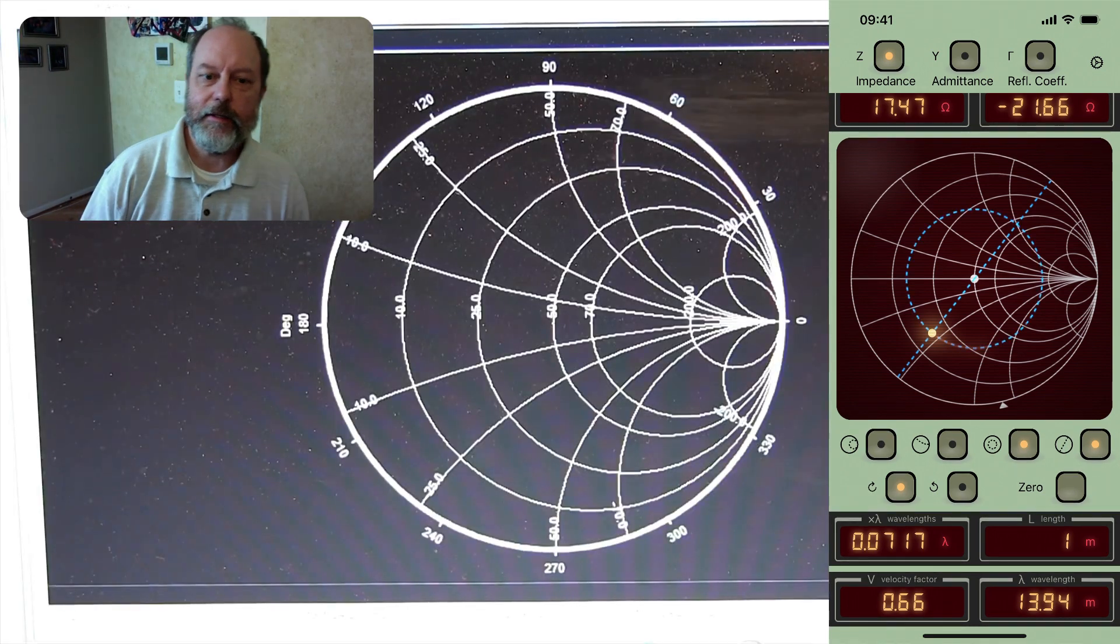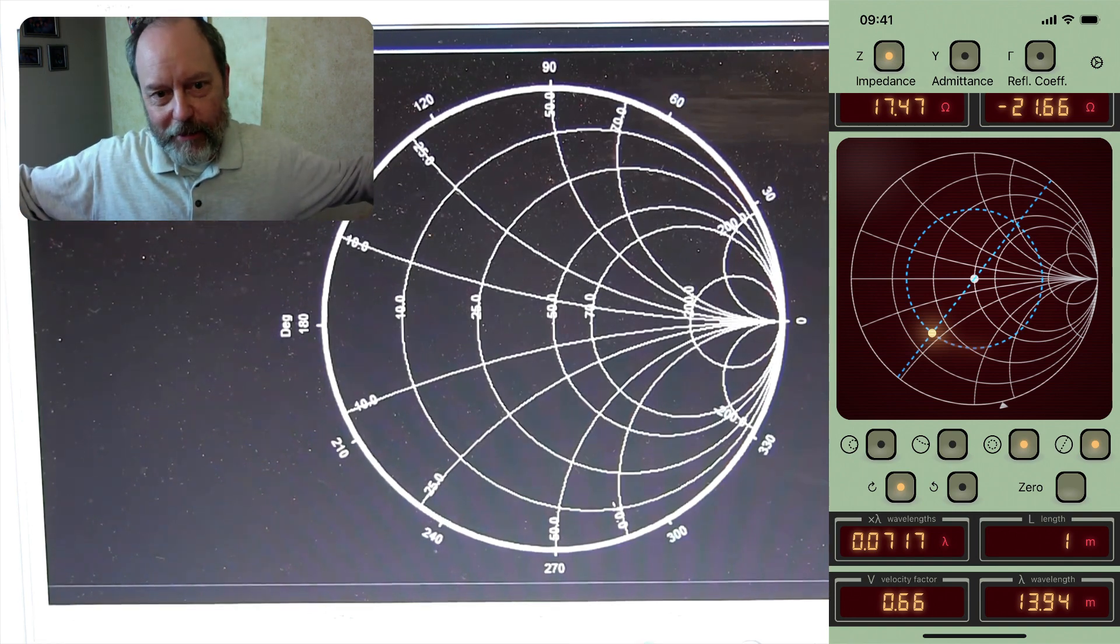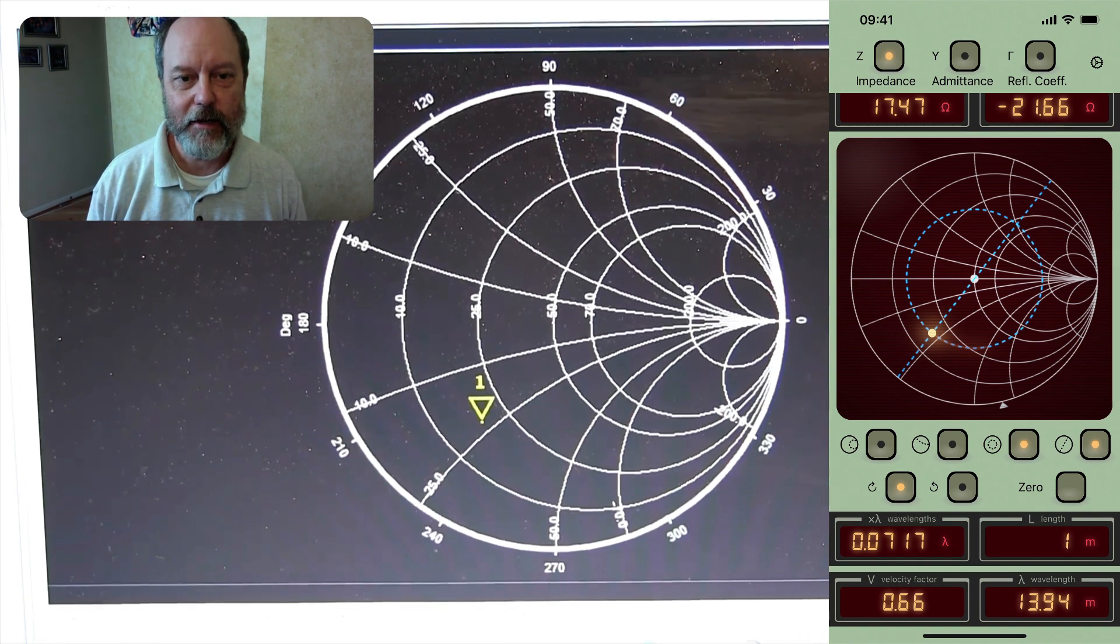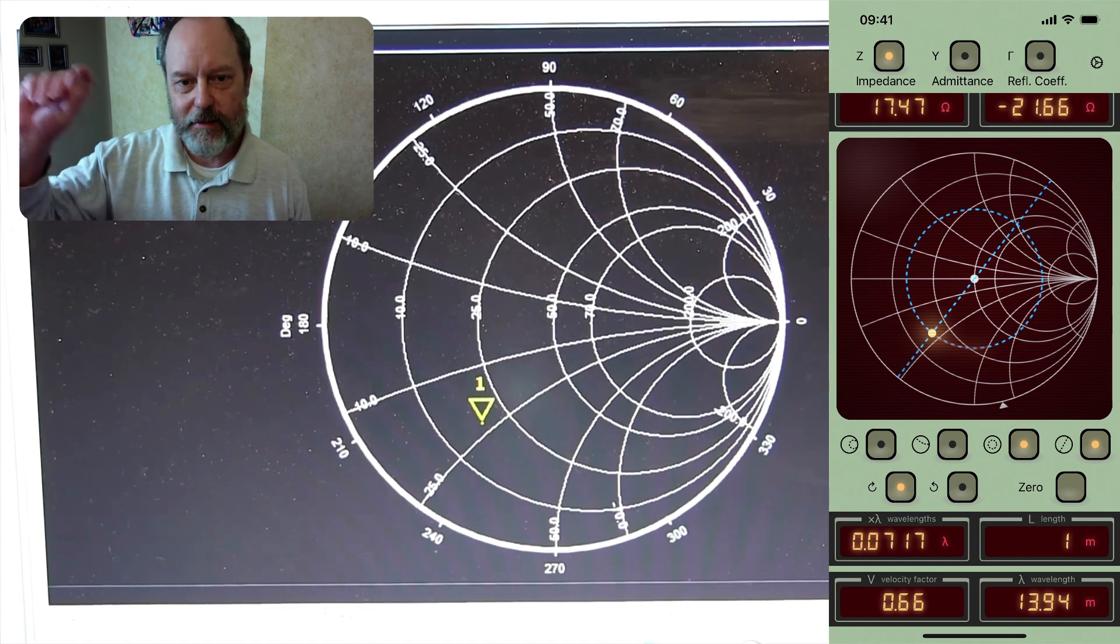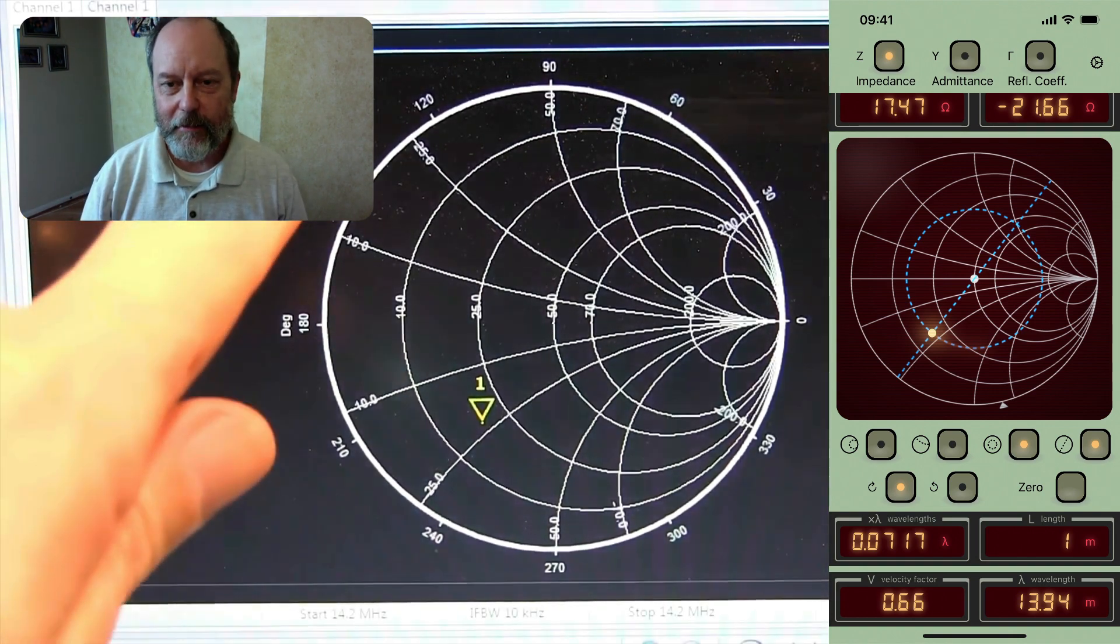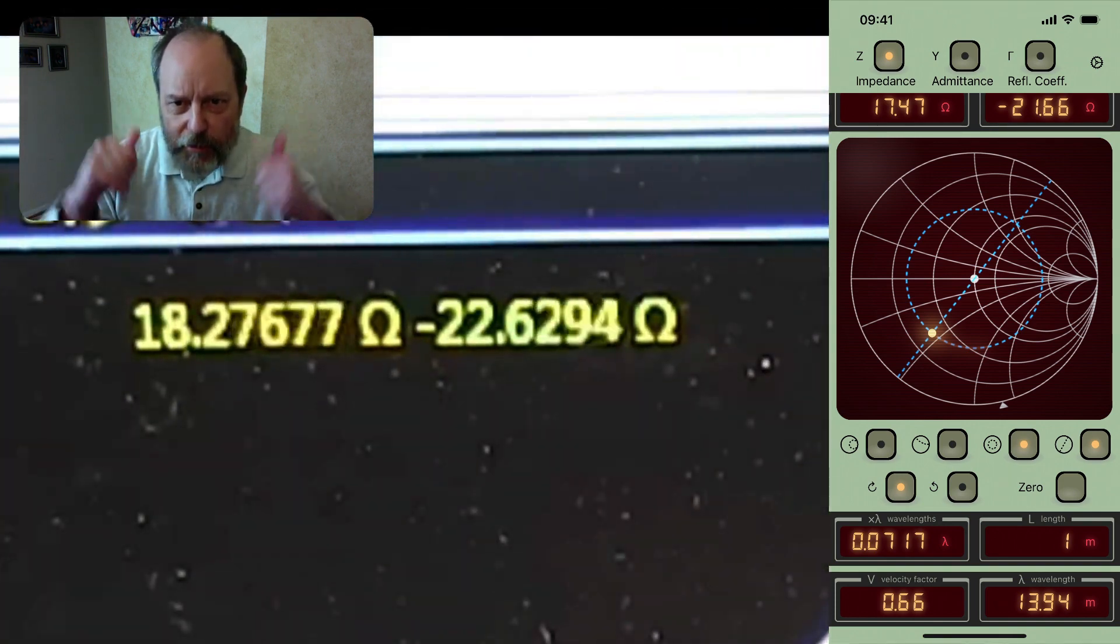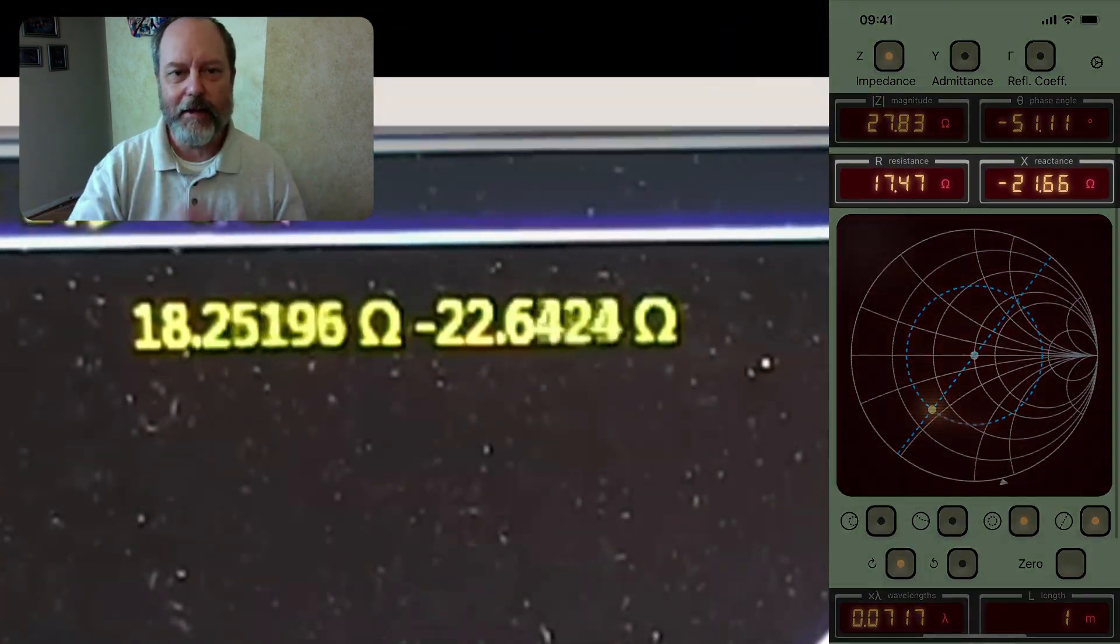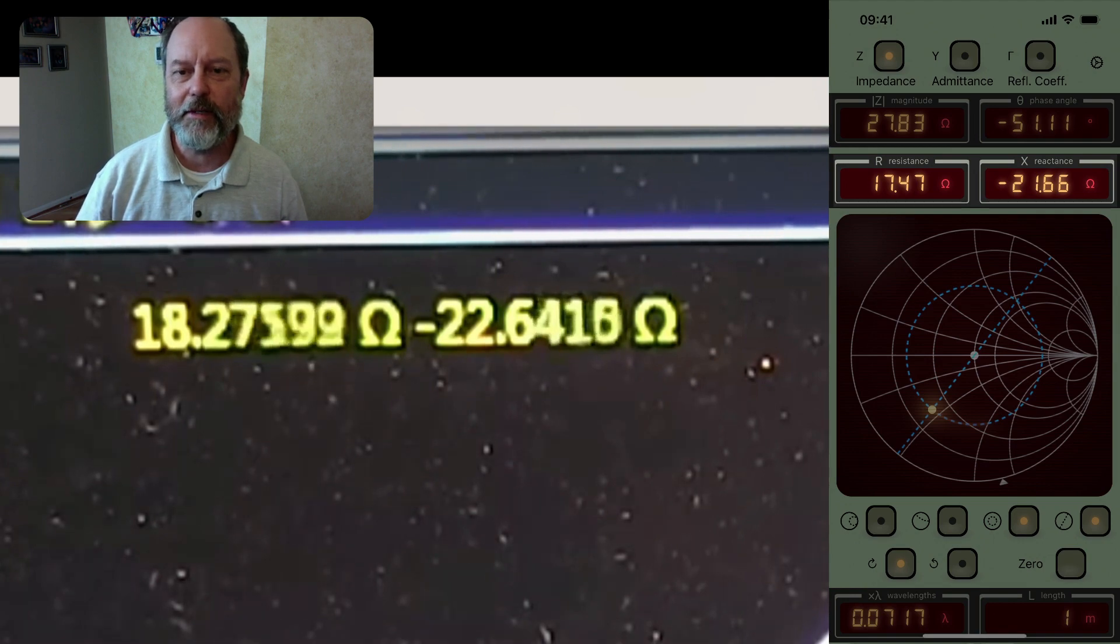And finally, if you take a look at what happens when Alan adds that one meter of length to his setup, it moves on his VNA over to the same place that the app is showing. And furthermore, if you scroll up and you look at the impedance in the app, you can see that it matches what Alan has shown in the VNA pretty much.